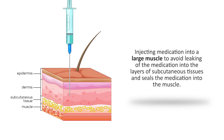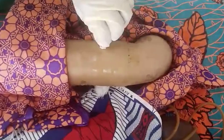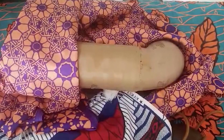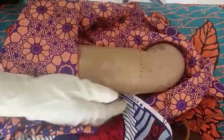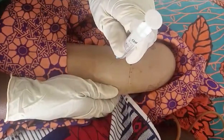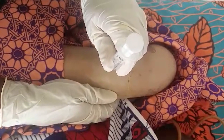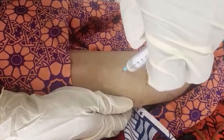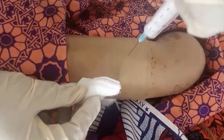Method one: the Z-Track method is used when injecting medication into a large muscle to avoid leaking of the medication into the layers of subcutaneous tissue and seals the medication into the muscle. With the non-dominant hand, displace the skin and subcutaneous tissue two to three centimeters sideways to begin the Z-Track method. Keep the non-dominant hand in place throughout the injection. With the dominant hand, hold the needle at an angle of 90 degrees. Inform the patient, then quickly insert the needle using a dart-like motion into the skin, aiming to inject where your non-dominant fingertips had originally been, until about a quarter of the needle is left showing.